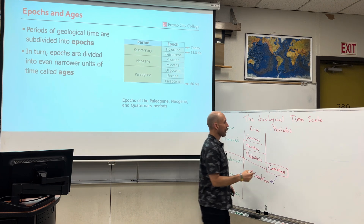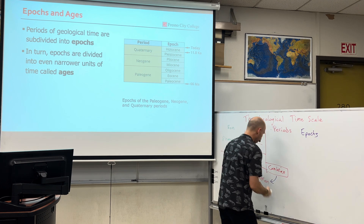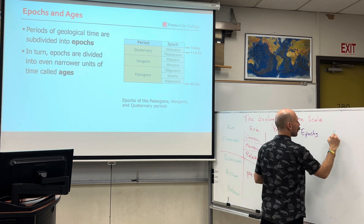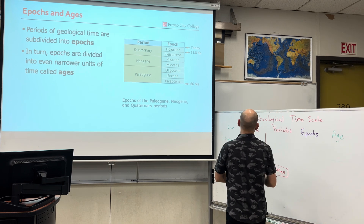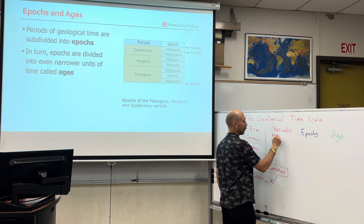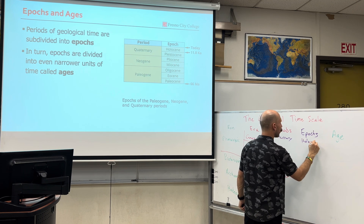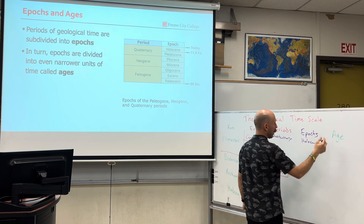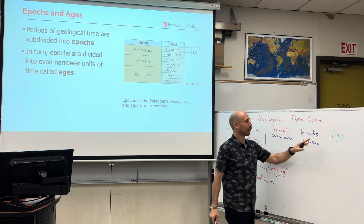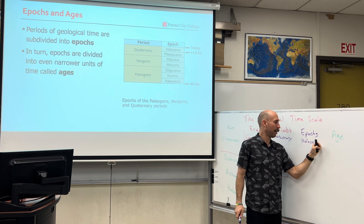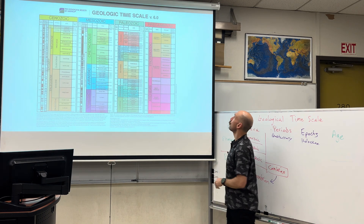After periods come epochs, and if you want to dial in a little bit further, you've got ages. The period we're living in right now is the Quaternary. The epoch is the Holocene. Ages are one smaller branch of the geological timescale.